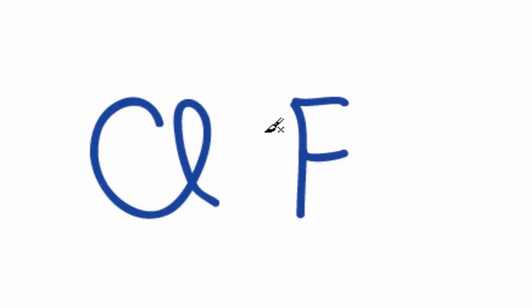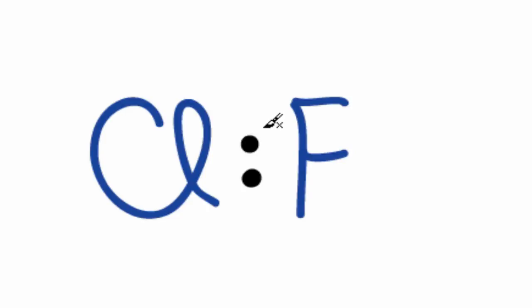We'll draw the chlorine atom and put the fluorine right next to it. We have 14 total valence electrons for the ClF Lewis structure. We'll put 2 between the chlorine and the fluorine to form a chemical bond, and then we'll go around the outside to fill the octets, or until we run out of those 14 valence electrons.